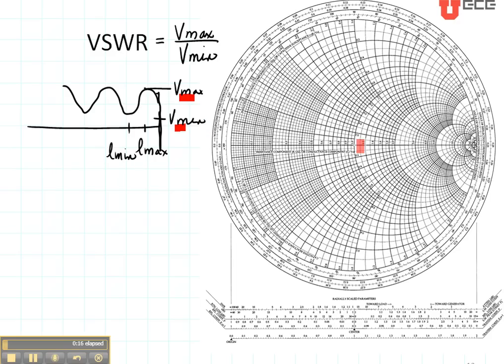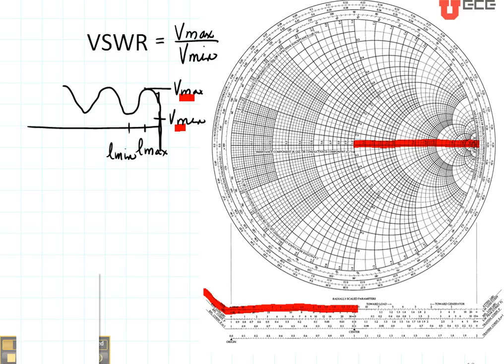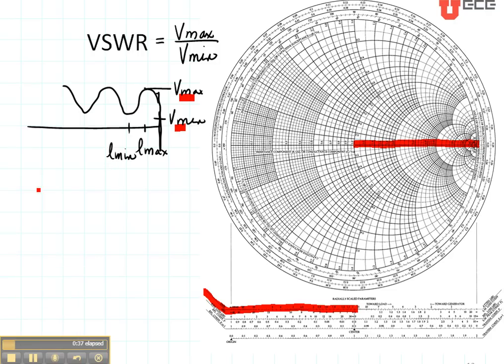We can read that in two different places on the Smith chart. One is right here on this axis and the other is right here. Both of these axes are going to give us the same value. So what we do is we plot the load impedance or whatever other location we want to find the standing wave ratio.